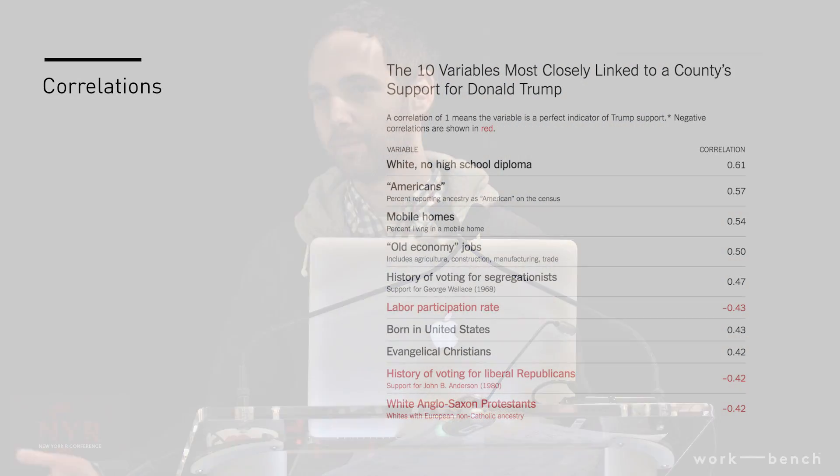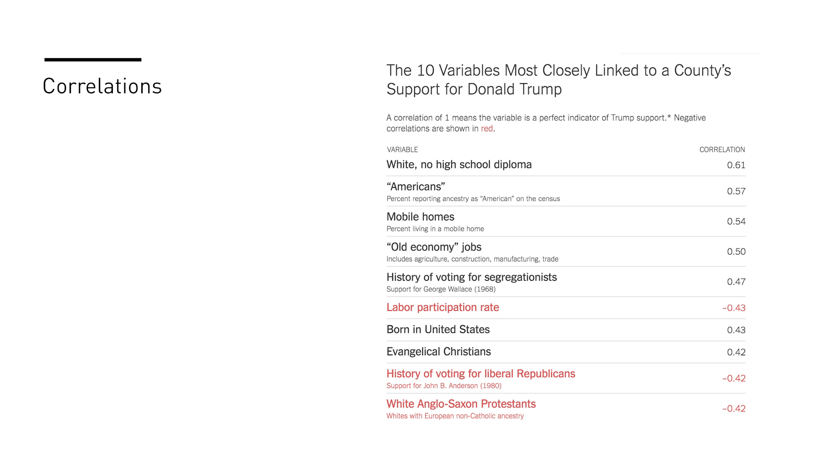And then another thing is just straight-up Stats 101, looking at the correlation between different variables. This was taking support for Donald Trump and comparing it to a bunch of different demographic and economic variables — finding that places with a large number of poorly educated white people, or people who reported their ancestry as American, or a large number of mobile homes, tended to vote in greater proportion for Trump. With my colleague Neil Irwin, we wrote an article looking at places like this and why Trump's message might resonate there. It was using statistics not for data visualization, but to construct and tell a story.